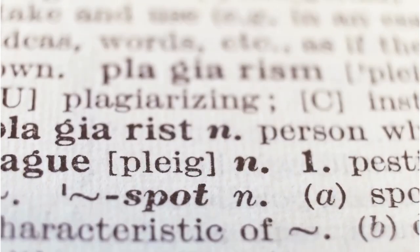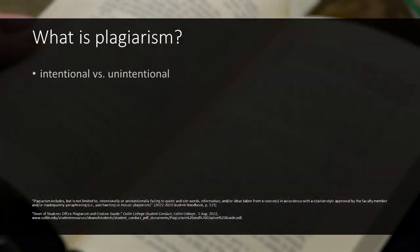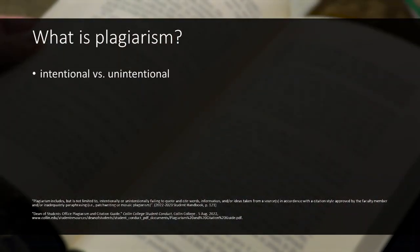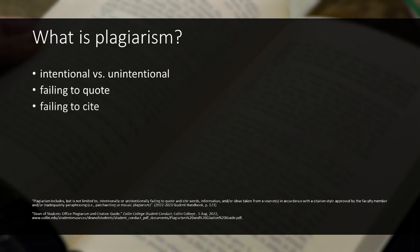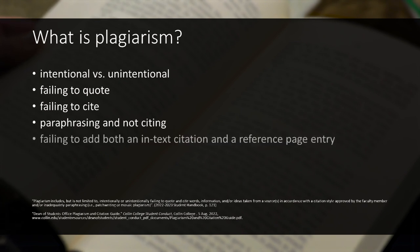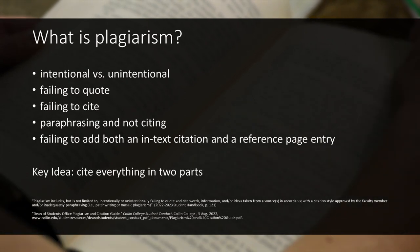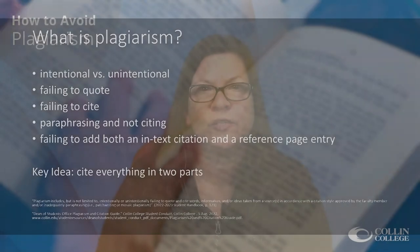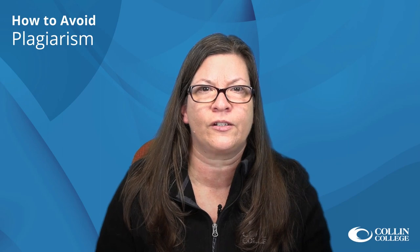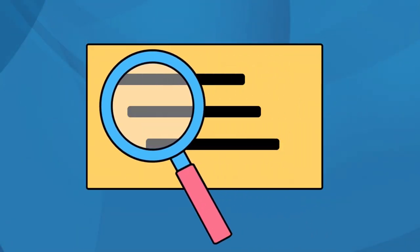First of all, what is plagiarism? Plagiarism may be intentional, but is oftentimes unintentional due to failing to quote or cite, paraphrasing and not citing, or failing to add both parts of a citation system. The key idea today will be to cite all borrowed material in two parts. Possible consequences for plagiarism in the United States include possible investigations,